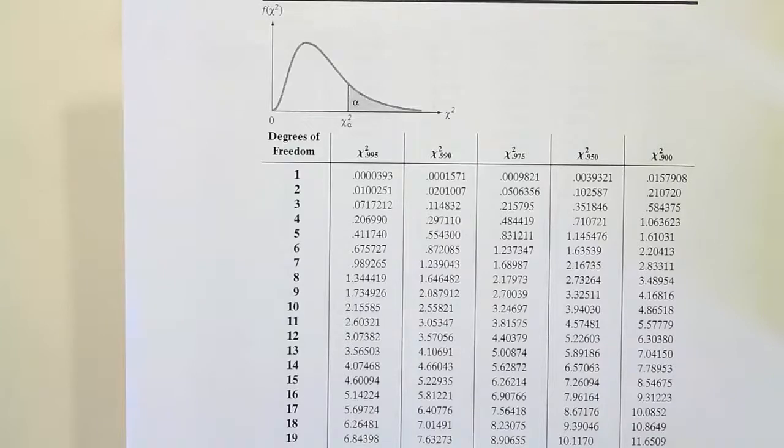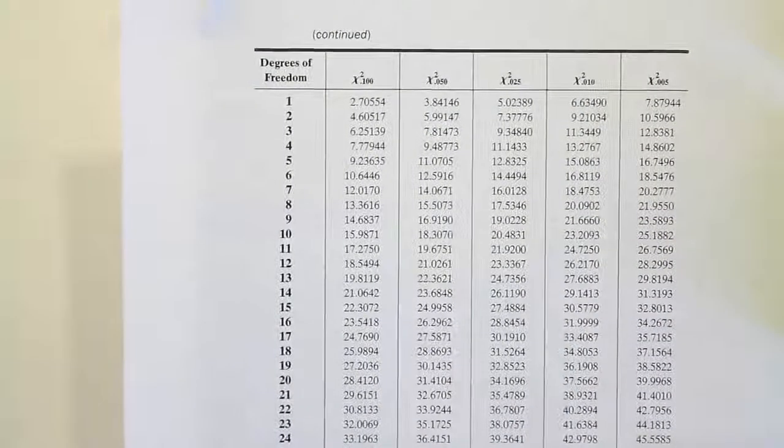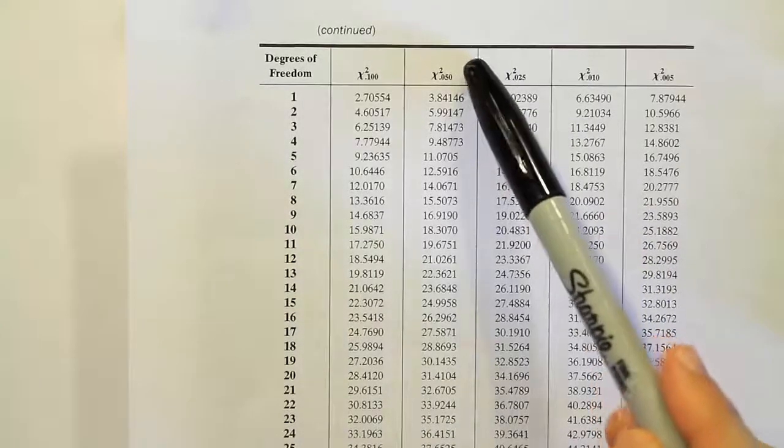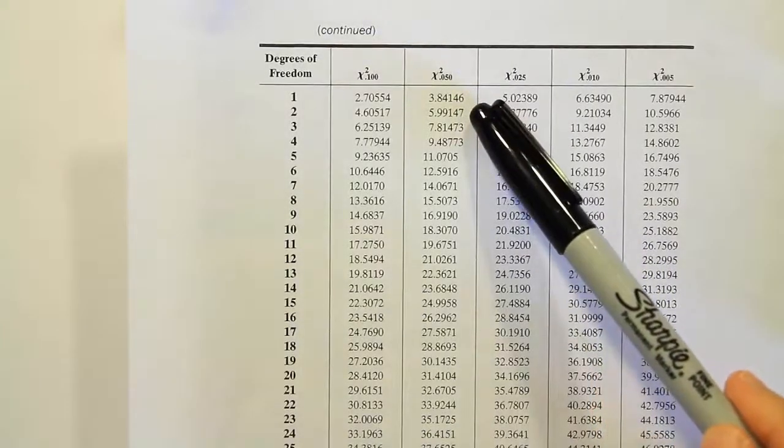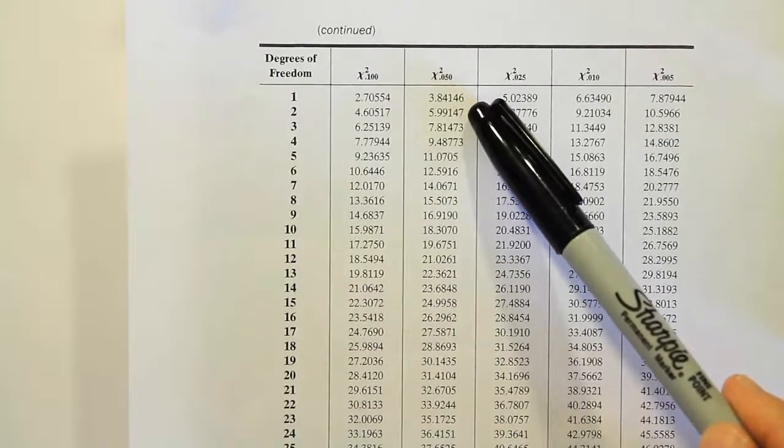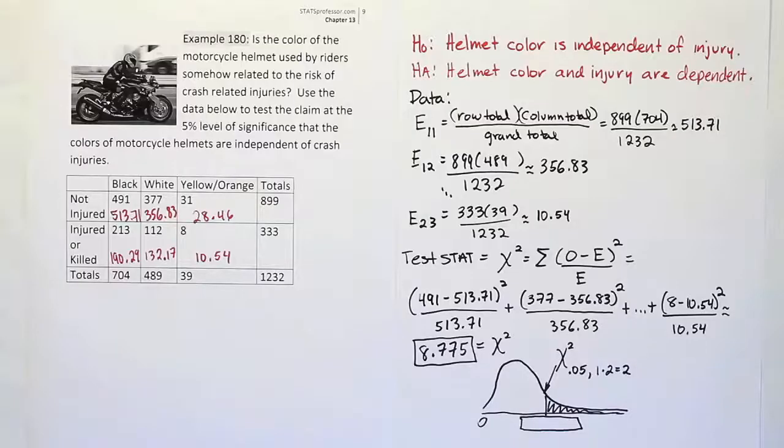On our chi-squared table, we need to look up .05 with two degrees of freedom. We don't have .05 on this first page, so we're going to turn over to the second page of the table. When we look at that, we see that for .05, two degrees of freedom, we find 5.99147. After going to the table, we found the value 5.99147.